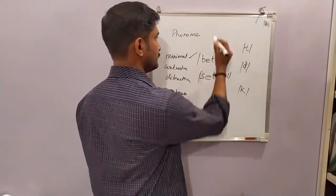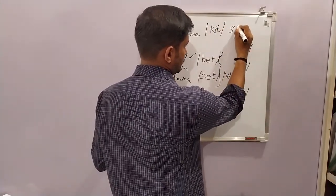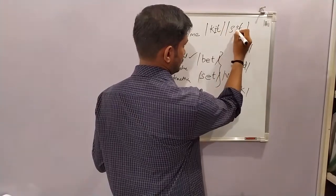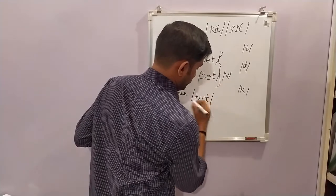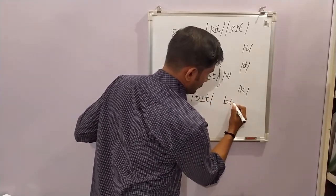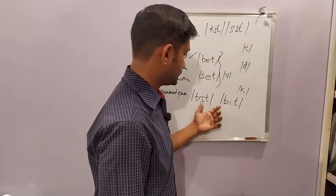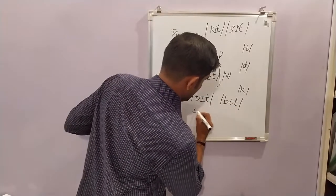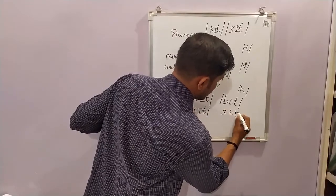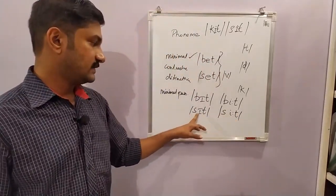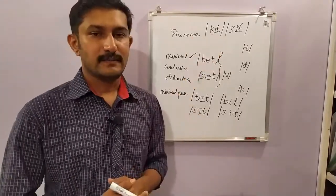We have other minimal pairs: 'kit' and 'sit'. Also 'bit' and 'beat' — these words differ from each other in the vowel sounds. And the minimal pair 'sit' and 'seat' — they differ from each other in one sound segment. So this much regarding the phoneme and minimal pair.